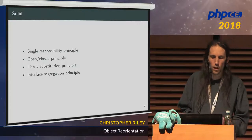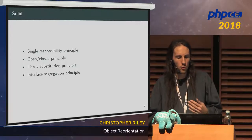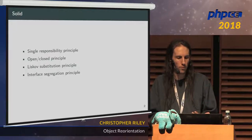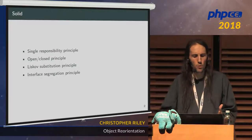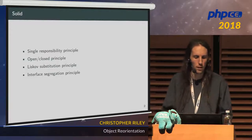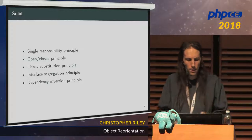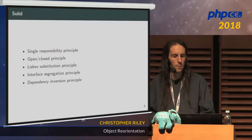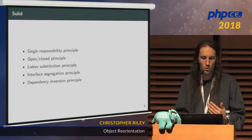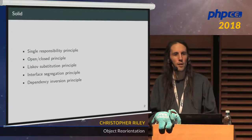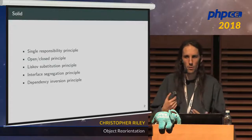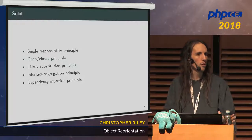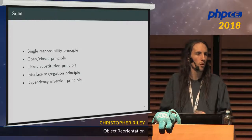The I stands for the Interface Segregation Principle. The idea is to ensure that interfaces on a class are kept to a minimum, containing only the necessary methods for what that class does. It's related to the Single Responsibility Principle, but for interfaces — for contracts between code. And the final letter, D, stands for the Dependency Inversion Principle: the idea that code should rely on abstractions, on interfaces, rather than concrete implementations. That allows you to switch out the implementation much more easily, without having to go and change all the consumers using that piece of code.